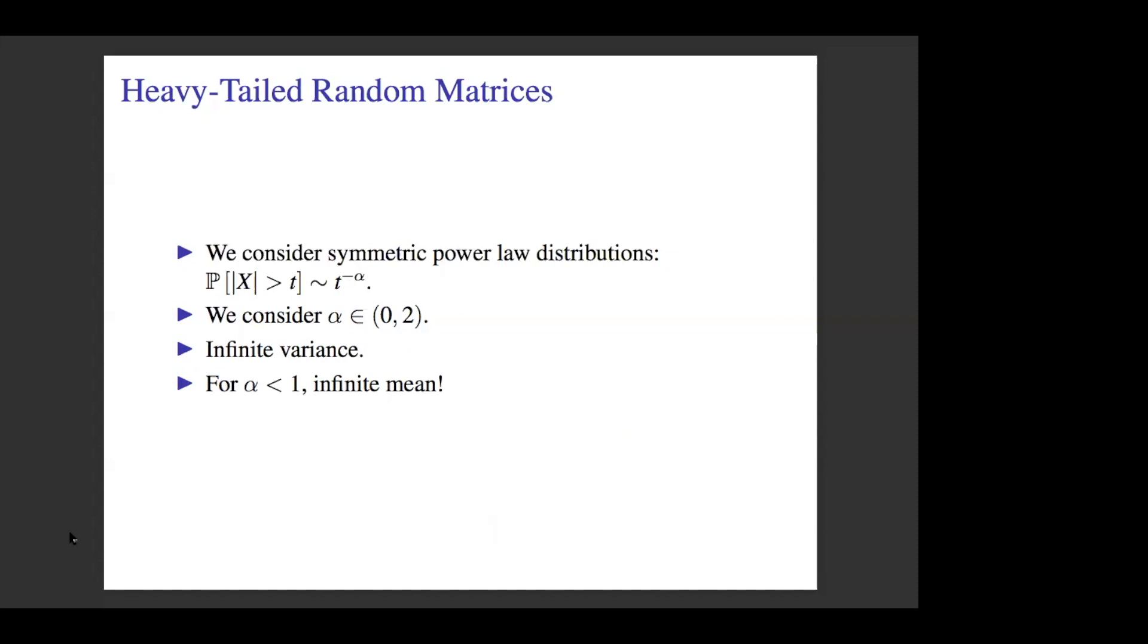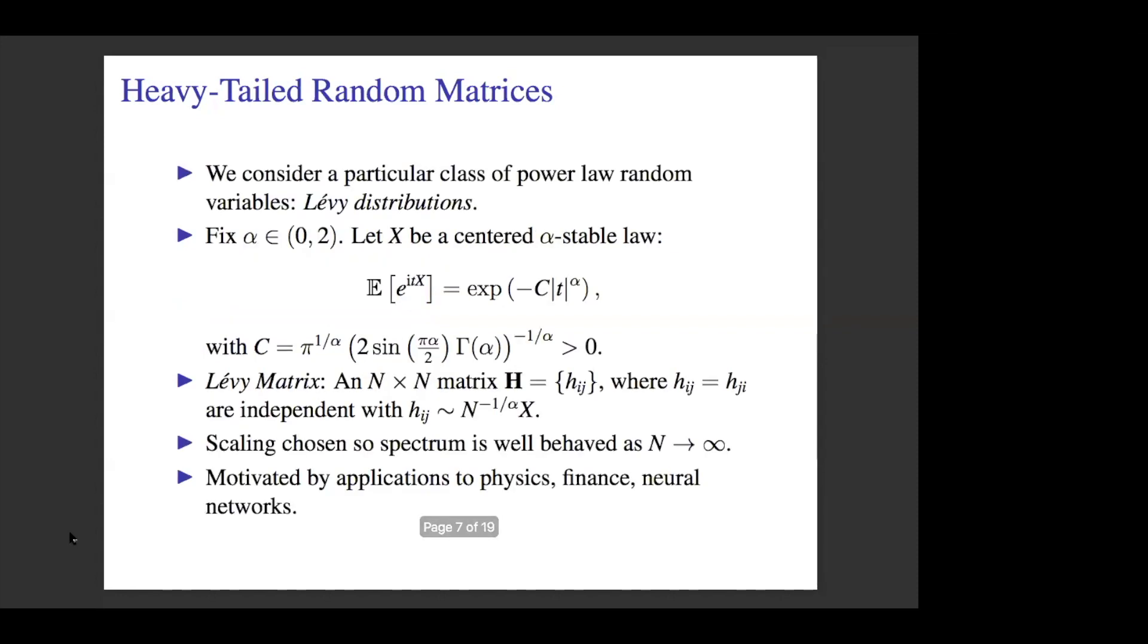I'm going to consider symmetric power law distributions. We consider particular power laws where the power alpha is between 0 and 2. Choosing the power in this way makes the distributions have infinite variance. In fact, when alpha is less than 1, you have infinite mean. So these are extremely heavy-tailed distributions. I actually want to focus on a particular class of distributions called Levy distributions.